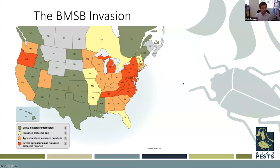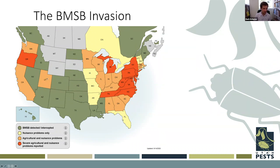BMSB invasion has spread across the US, with the most severe agricultural problems in the mid-Atlantic. Issues are starting to increase in the Pacific Northwest and West as well. Utah had early detections and first confirmed agricultural damage in 2017, with issues appearing stable or worsening. For those in Nevada, Montana, or Idaho, agricultural issues from BMSB aren't prominent yet, but it's good to keep an eye out for them.